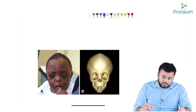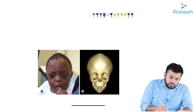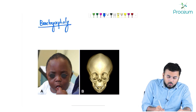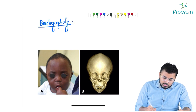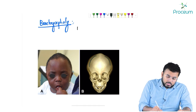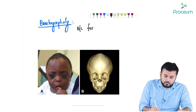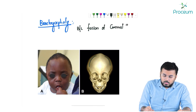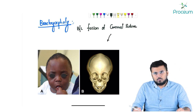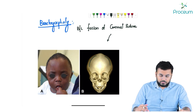The next picture shows brachycephaly. Here we have the coronal suture on both sides and both coronal sutures fuse - bilateral fusion of the coronal suture leads to brachycephaly.